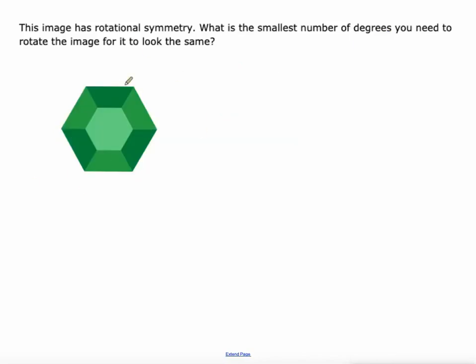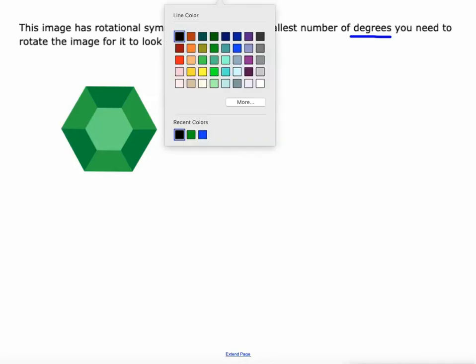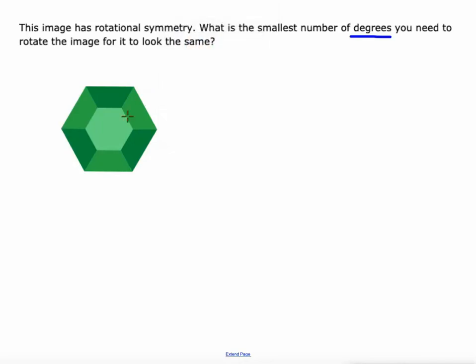This one's kind of tricky because it's got different colors, slightly different shades of green. So if we look at this one and we break it up, maybe we go from the center of rotation out here. So is it that this is our rotation? Well, let's look at that a little bit.